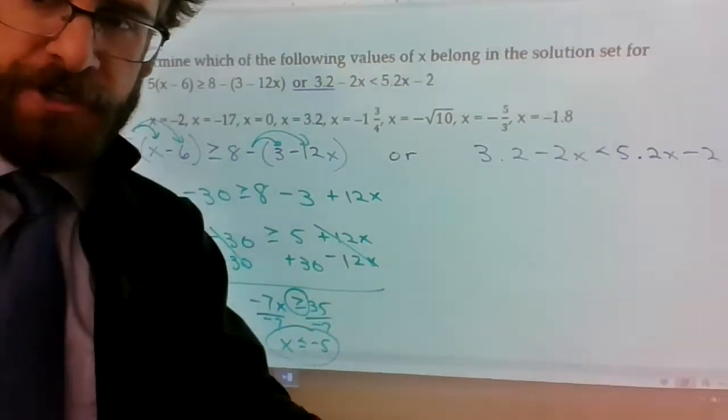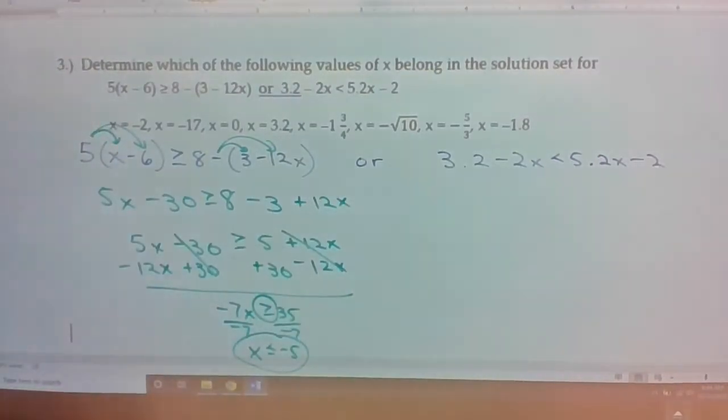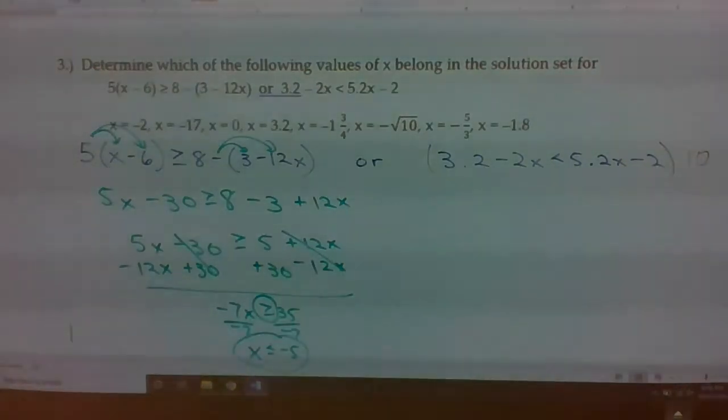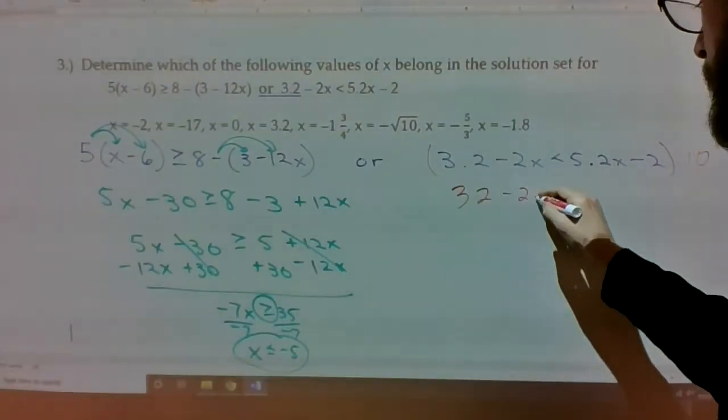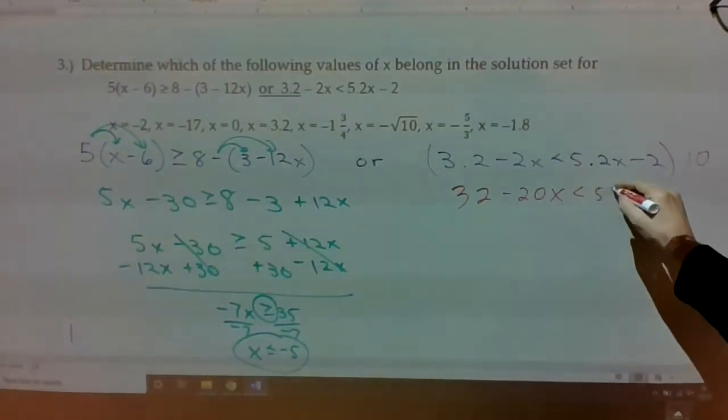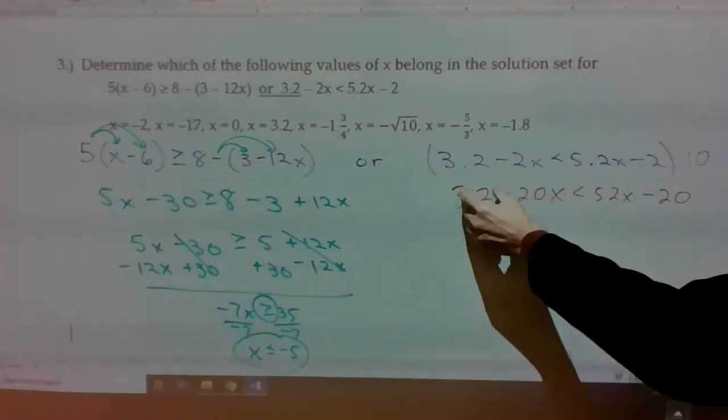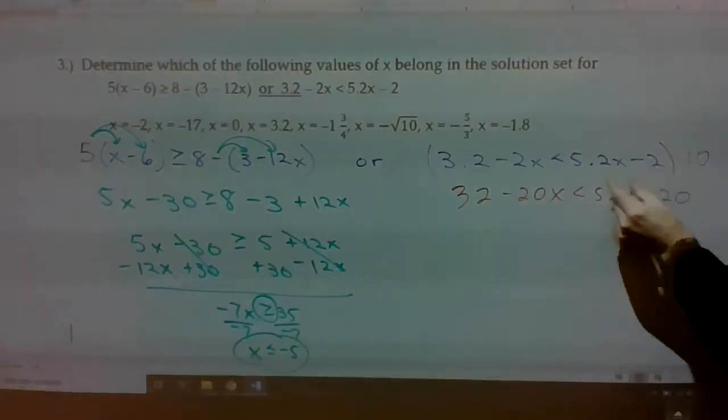The other part to this solution is everything over here. I see all these decimals, so I'm going to multiply everything by 10 right off the bat. When you do that, this becomes 32 minus 20x is less than 52x minus 20. Remember, make sure you don't just move the decimals, but you also add a digit of 0 to the whole numbers.